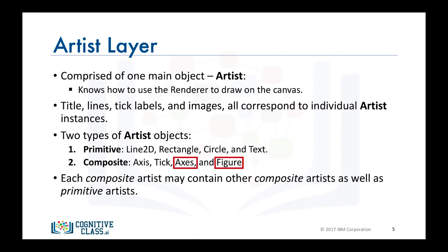It is important to note that each composite artist may contain other composite artists as well as primitive artists. So a figure artist, for example, would contain an axis artist as well as a rectangle or text artist.